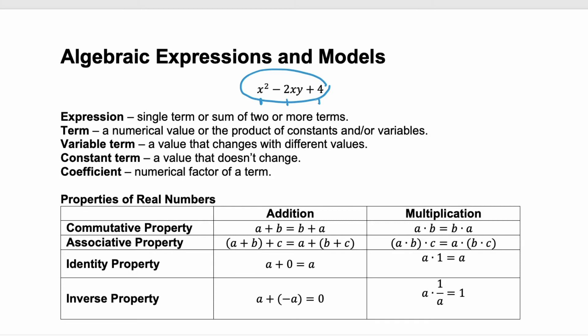A variable term would be any term that changes with different values. So our first two terms are variable terms and our last term, the 4, is a constant term because it's a value that doesn't change. It's always 4.